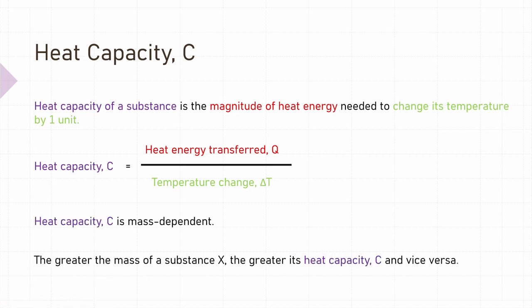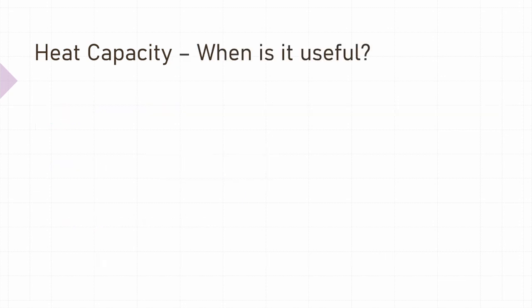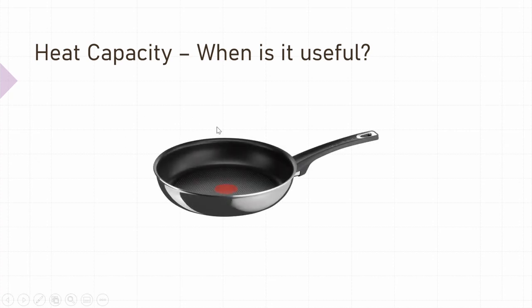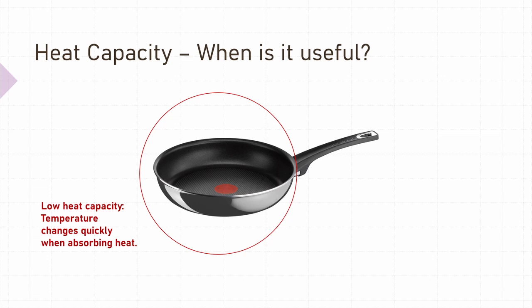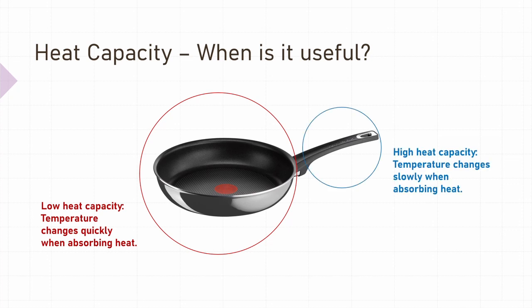Heat capacity is a mass-dependent quantity. This means that the value of heat capacity is affected by the mass of a substance — the greater the mass of a substance, the greater its heat capacity, and the reverse is also true. Knowledge of heat capacity is needed when designing materials that need to either change temperature quickly or slowly. For example, the part of the pan that you cook your food on should change temperature quickly, which is why it's made from materials with low heat capacity such as metals. Pan handles are usually made from materials with high heat capacity such as plastics, so they absorb a lot of heat energy with minimal increase in temperature.